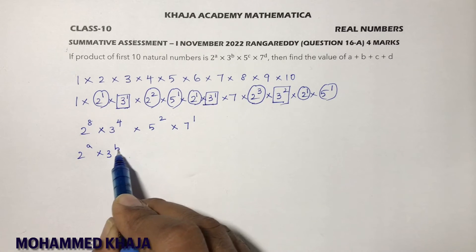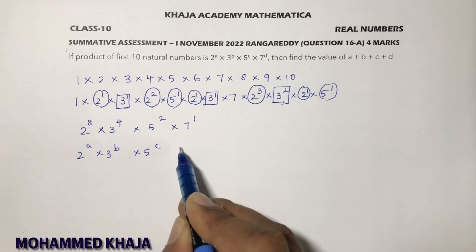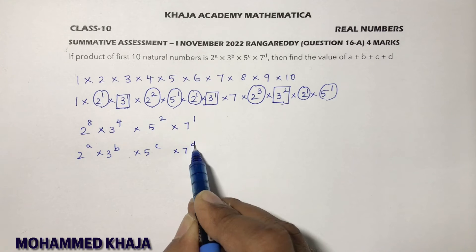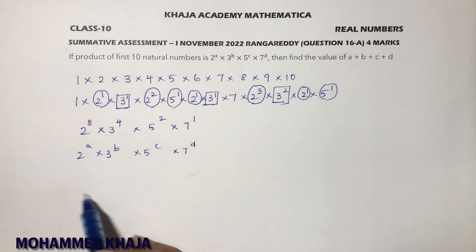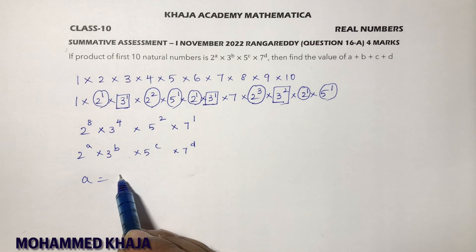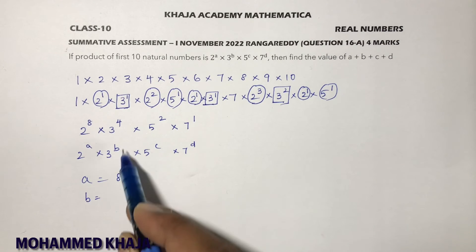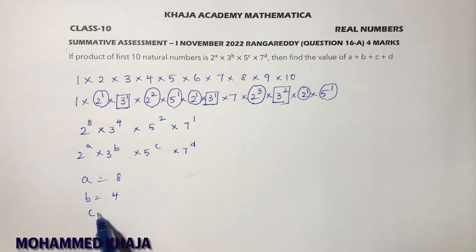Now compare with the given question 2^a × 3^b × 5^c × 7^d. The value of a is 8, b is 4, c is 2, and d is 1.